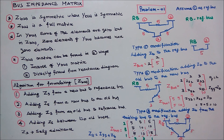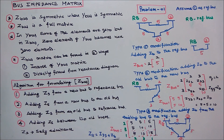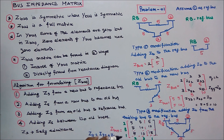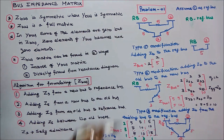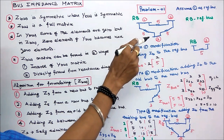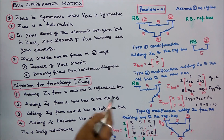This gives a 3 by 3 matrix. Since the reference bus is 1 and its voltage is 0, we should get only a 2 by 2 matrix — that is an N minus 1 matrix. So we have to eliminate the reference bus using the Kron reduction method to get the actual 2 by 2 matrix of this system. Second case: we will consider bus 3 as the reference bus to see whether we get the same matrix.